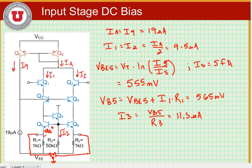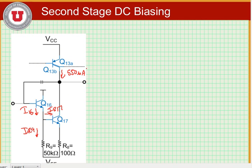So now we need to find the biasing of the second stage. We go to the second stage and recall that the current flowing through Q13B was 550 microamps, and so we can find that all of that current flows through Q17, is equal to VB17, and hence we can find the base to emitter voltage for 17.